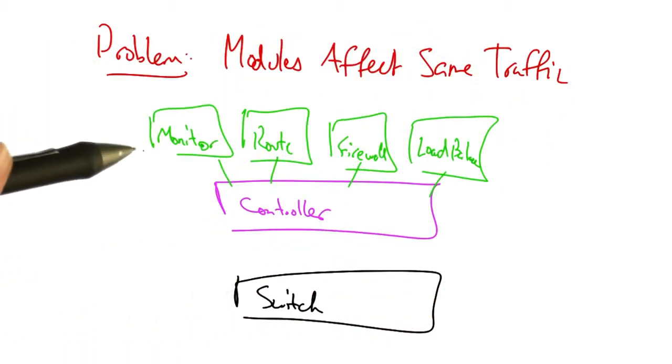One issue with programming at this higher level of abstraction is that an operator might write multiple modules, each of which affects the same traffic.